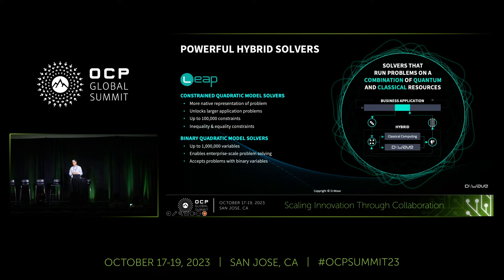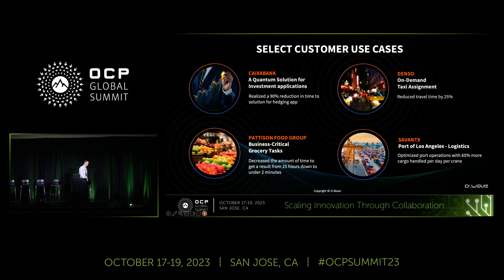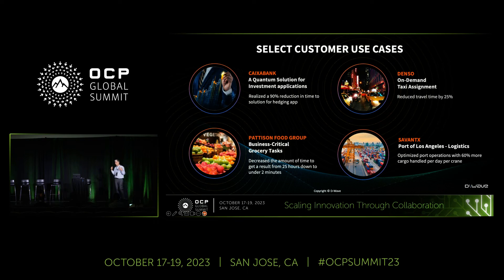Generally speaking, hybrid computing is the best approach. We make available through our Leap quantum cloud service hybrid solvers that use various approaches, allow specification of constraints, and support a quadratic model. Most of our business customers are using this hybrid approach. We have many customers in various stages, from testing the waters with small-scale prototypes all the way up to production scale, asking: can I use hybrid classical plus quantum annealing solvers to solve my problems?